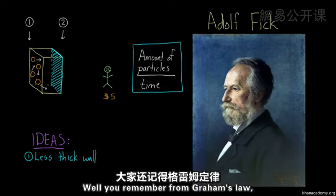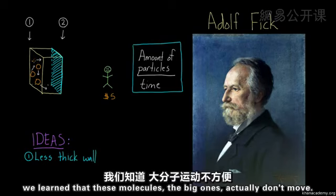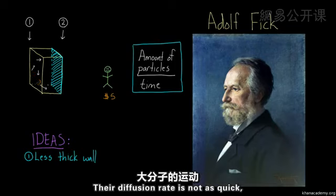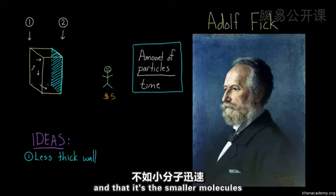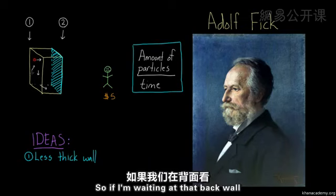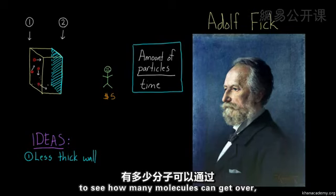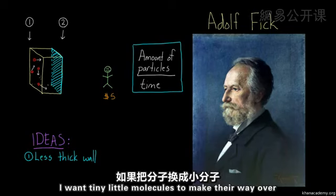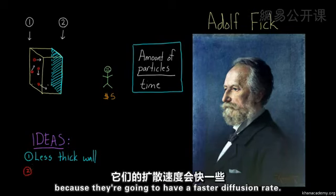What's another idea? Well, you remember from Graham's Law, we learned that these molecules, the big ones, actually don't move. Their diffusion rate is not as quick. And it's the smaller molecules that actually have a faster diffusion rate. So if I'm waiting at that back wall to see how many molecules can get over, I want tiny little molecules to make their way over.